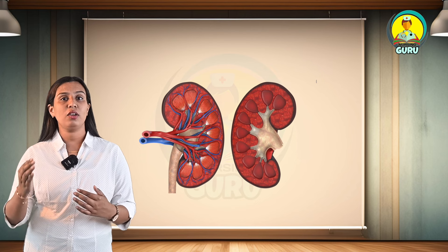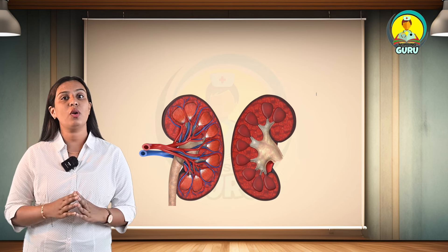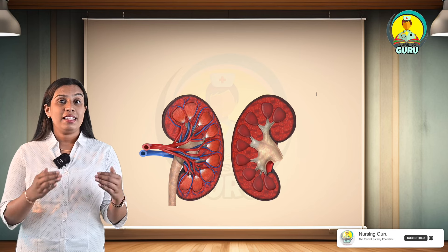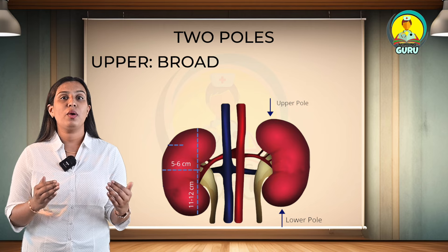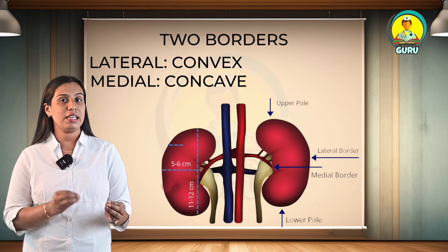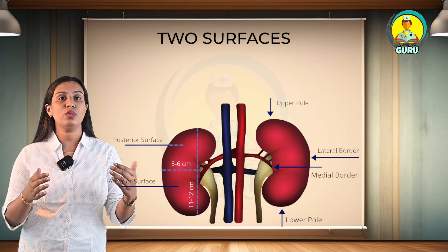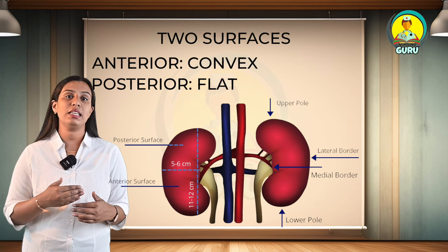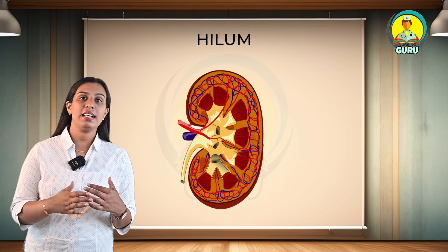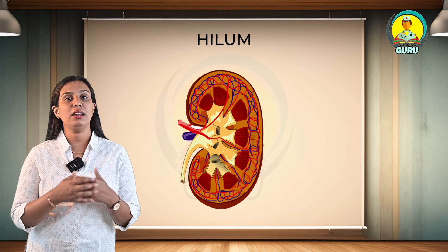Each kidney has a lateral convex and medial concave border. Each bean-shaped kidney presents the following features: 2 poles — the upper pole is broad and the lower pole is pointed. 2 borders — lateral is convex and the medial is concave. Regarding the surface, it has 2 surfaces — anterior is convex and the posterior is flat. Each kidney also has thick lips of renal material termed the hilum, which surrounds its medial concave border.